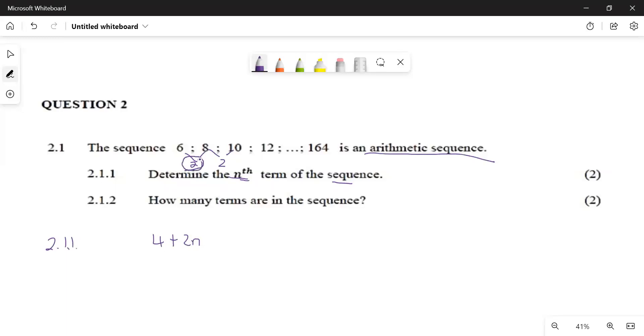The first thing that we want is the difference. The difference here to here is D. D is given by T2 minus T1. Our T2 here is 8, and then our T1 is going to be minus 6, which is going to give us 2.